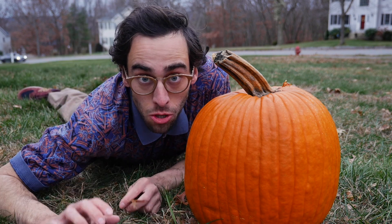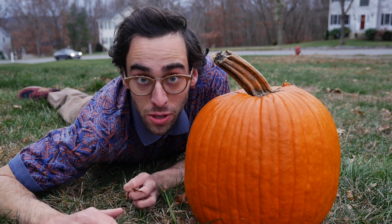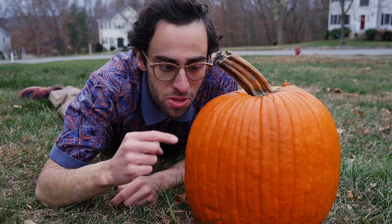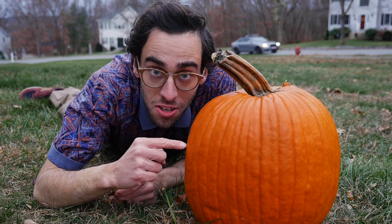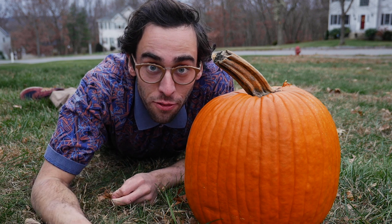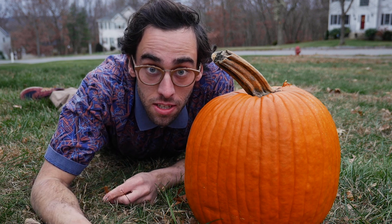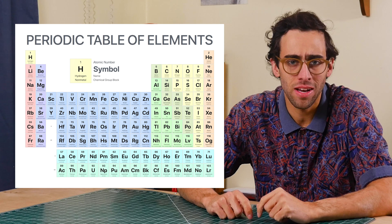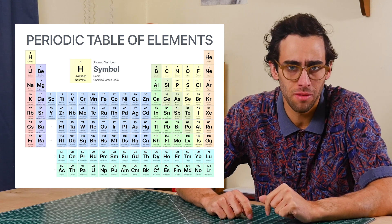Would you believe me if I told you that everything in the universe — from this pumpkin to a popsicle — is made from just a hundred and eighteen different ingredients? Everything living and non-living in the entire universe is made from some combination of the hundred and eighteen elements on this chart right here, called the periodic table of elements.